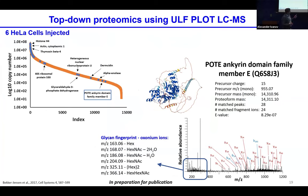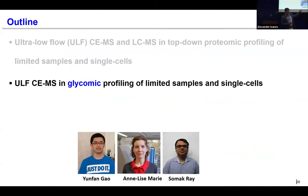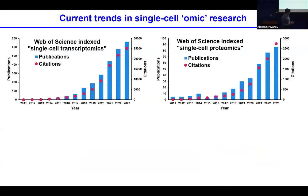When we examined this set of data, we found numerous peaks corresponding to oxonium ions of glycans. It means that with additional search strategies added to the data analysis, we should be able to get to glycan analysis as well. Which brings me to the next story: glycomic analysis of single cells and small sample amounts. Thank you Yun Fan, Annalise, and Somak for your work and help with this story.